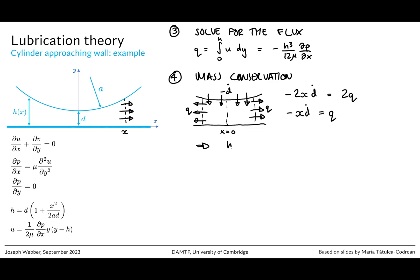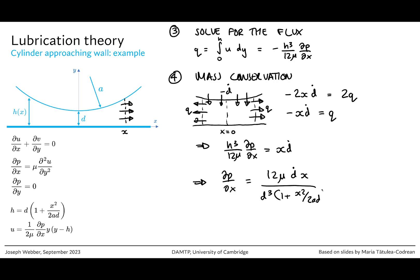From mass conservation, H cubed over 12 mu times dP/dx equals x d-dot. Therefore dP/dx equals 12 mu d-dot times x over D cubed times (1 plus x squared over 2AD) to the minus 3, substituting the expression for H. The sign is correct: the pressure gradient is negative when d-dot is negative, meaning fluid is squeezed out of the gap as the cylinder approaches the wall.